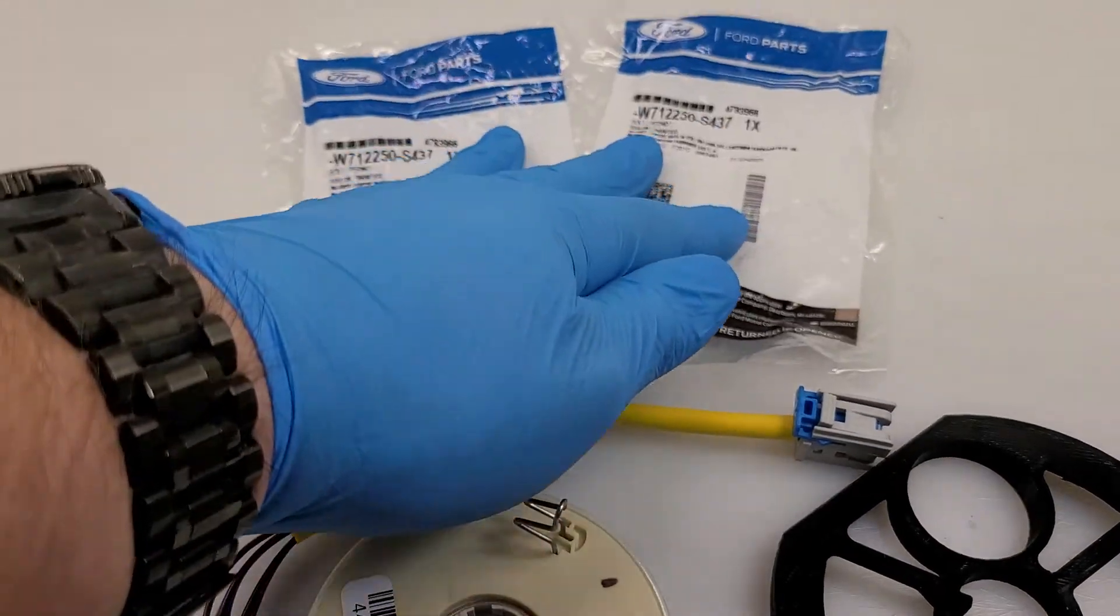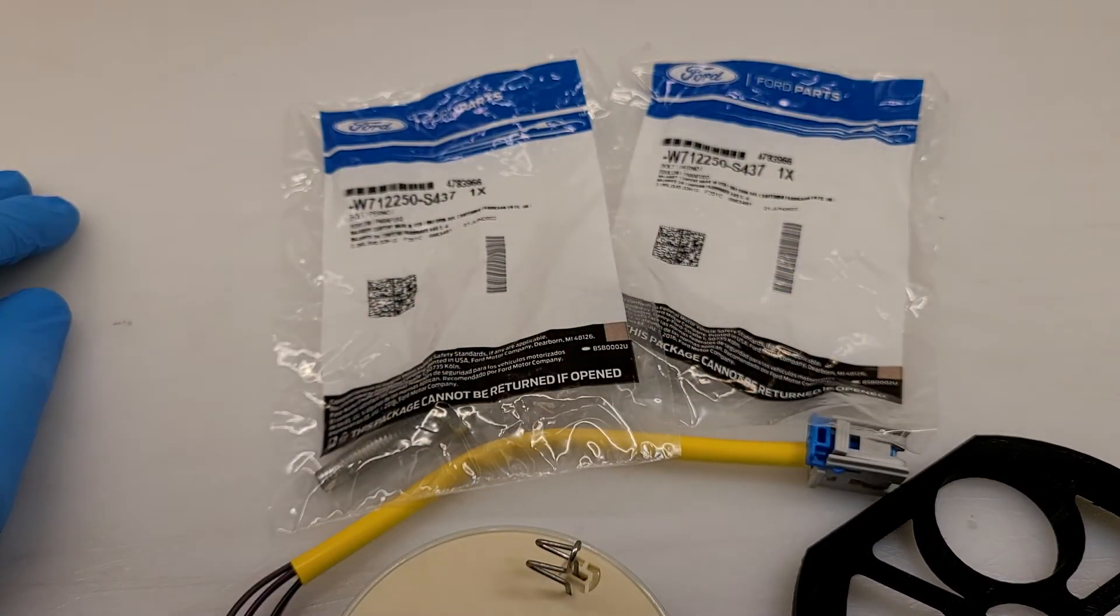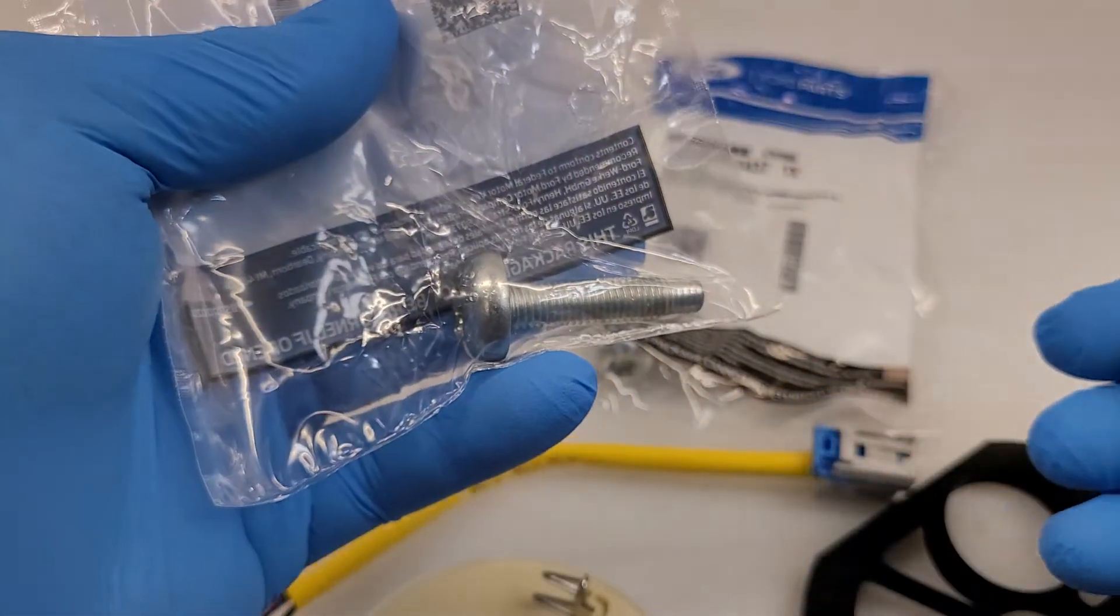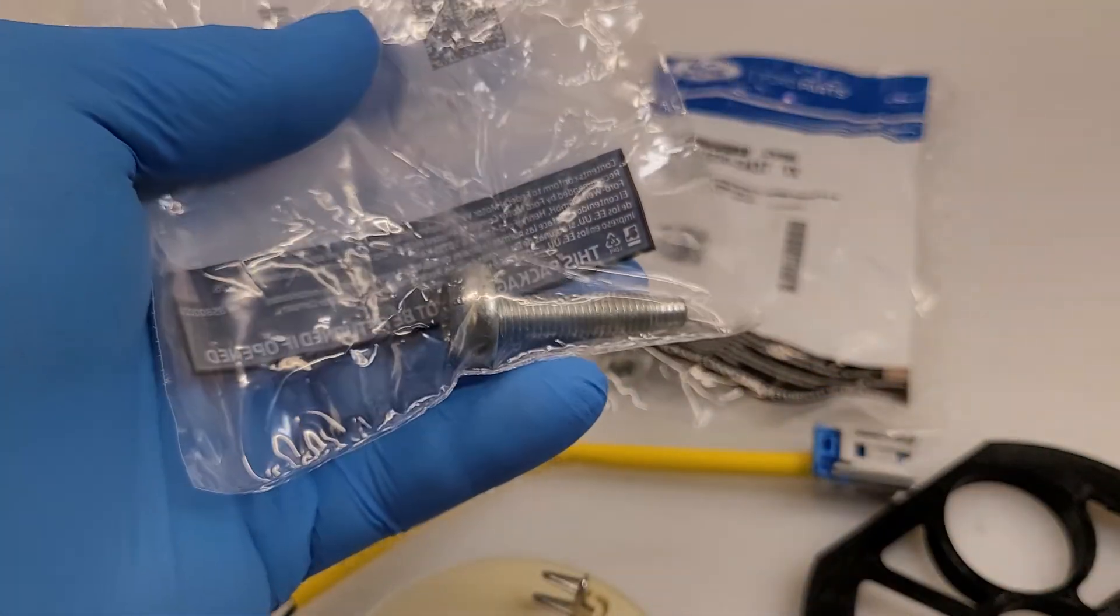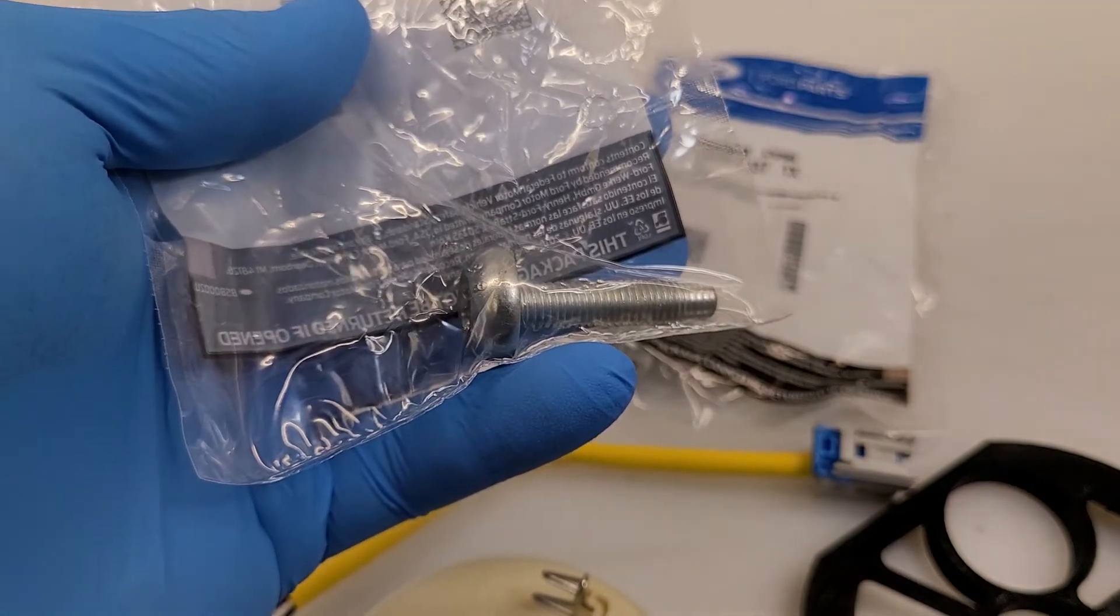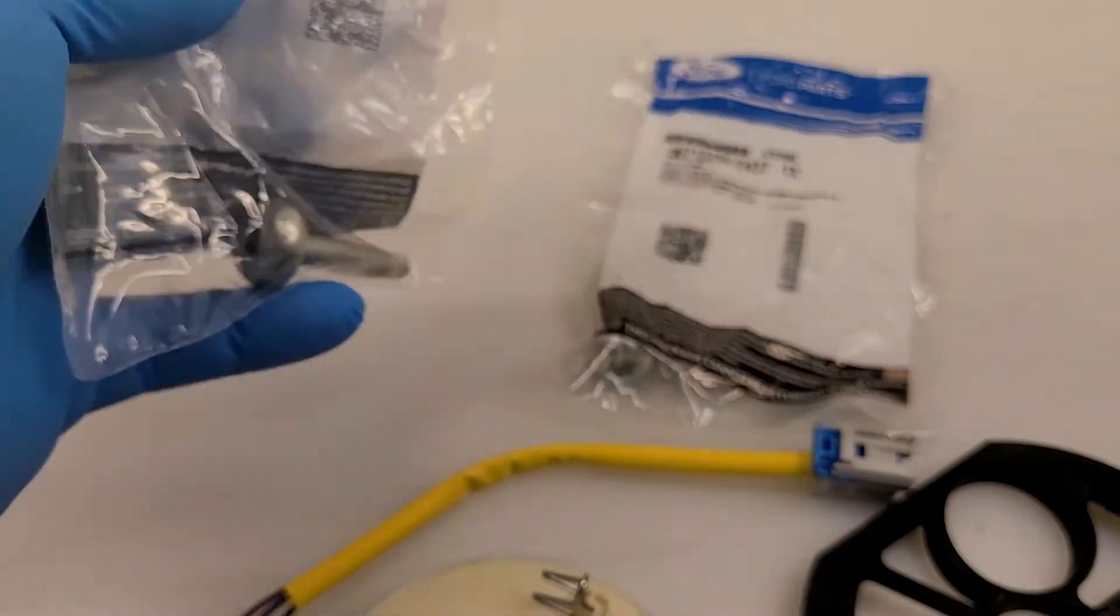You're also going to receive two upper column bolts. These are torque to yield bolts. As you can see, these come in Ford packaging and Ford does recommend replacing these and not reusing the old bolts.